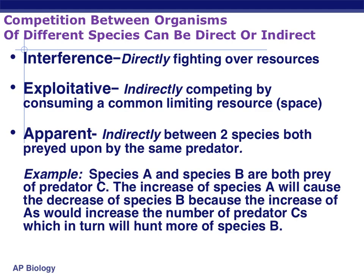Species A and species B are both preyed on by predator C. The increase of species A will cause the decrease of species B, because an increase in species A will increase the number of predator C, which in turn will hunt more of species B. If you picture it in your mind slowly, it should make sense — if it doesn't, ask in class.